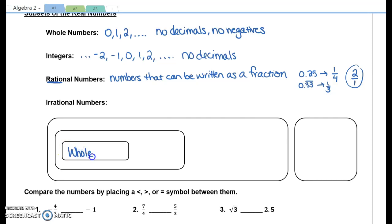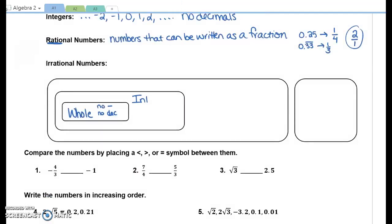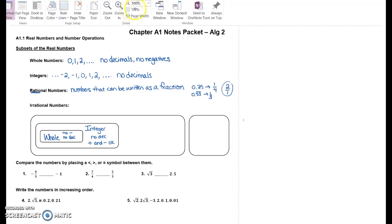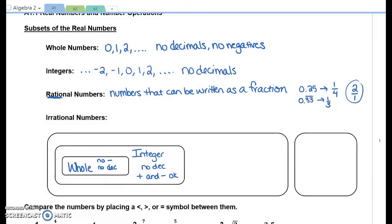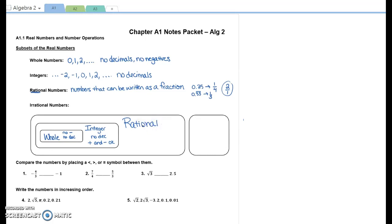So there's a little chart in your notes that I'd like you to fill out. Whole numbers go on the very inside. And I'm even going to write some helpful stuff in there. No negatives, no decimals. Every single whole number is also an integer. Integers are positive and negative numbers, still no decimals. Every single whole number and every single integer is also a rational number.